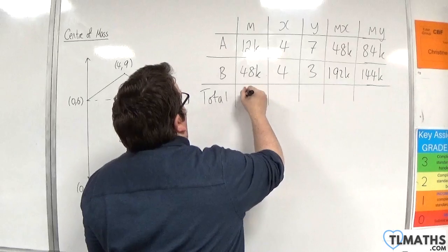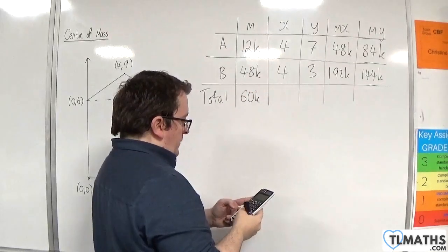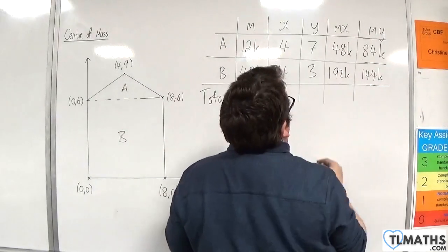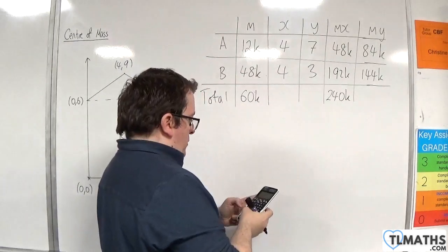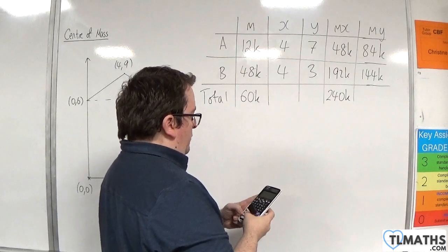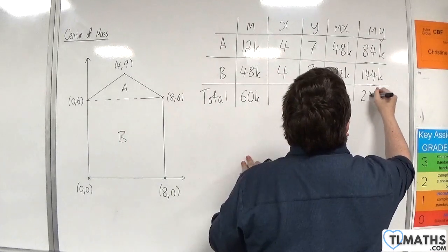So, in total here, we've got 60k. 48k plus 192k is going to be 240k. Then, we've got 84 plus 144, so 228k.